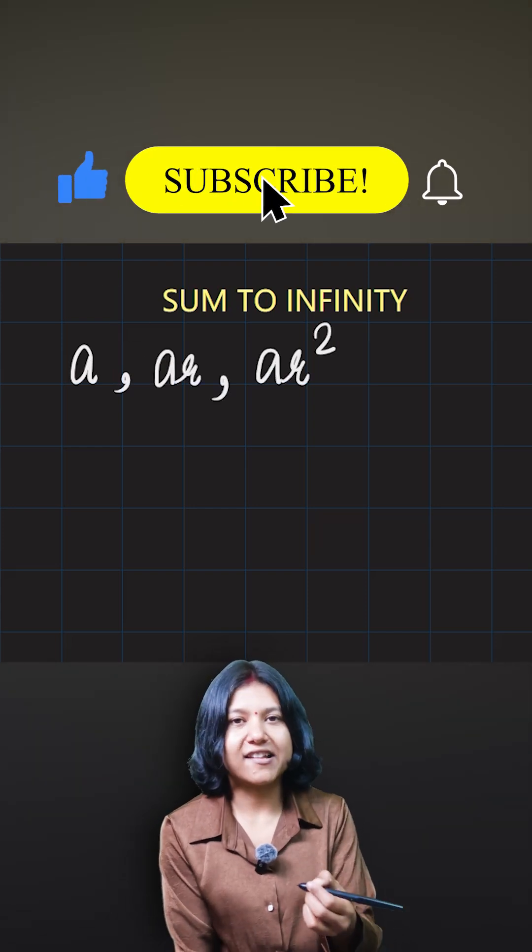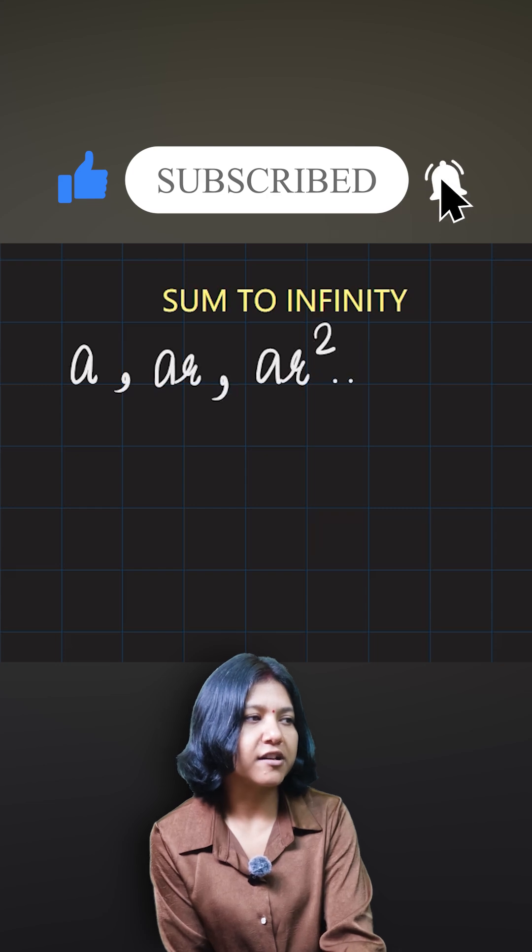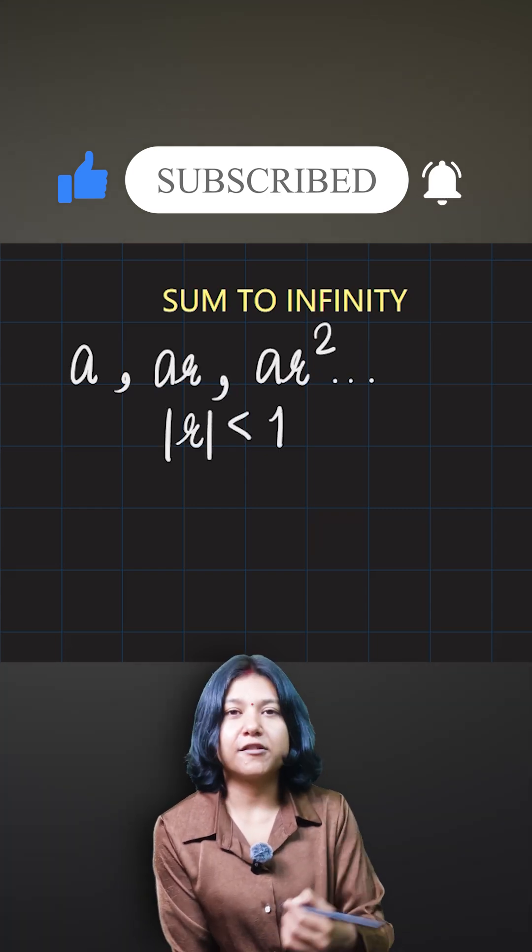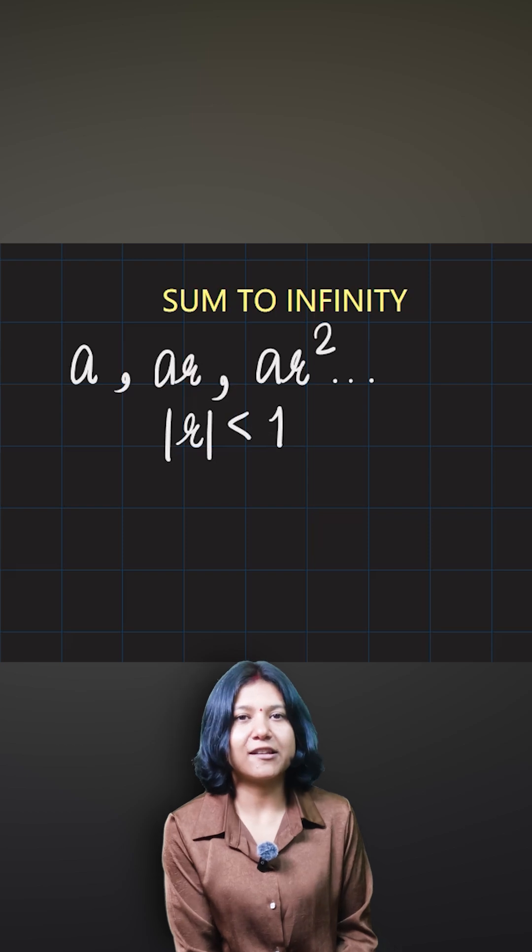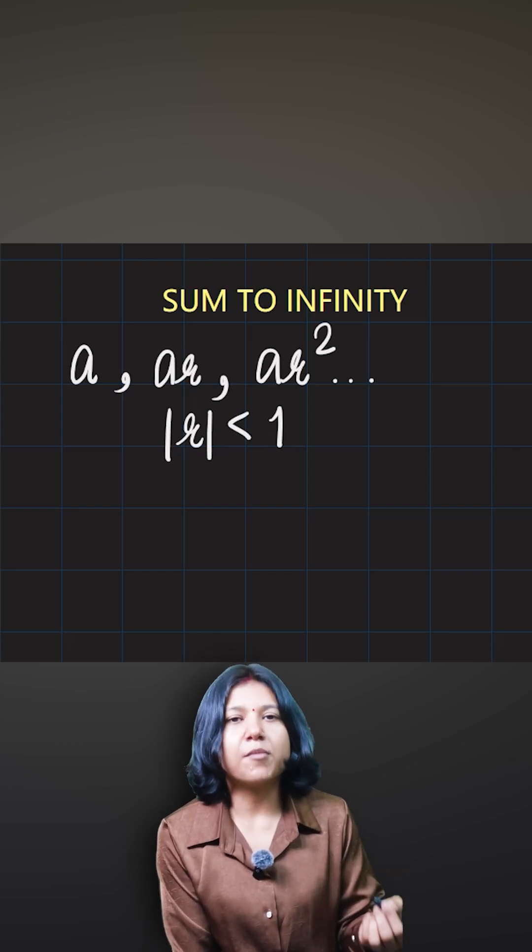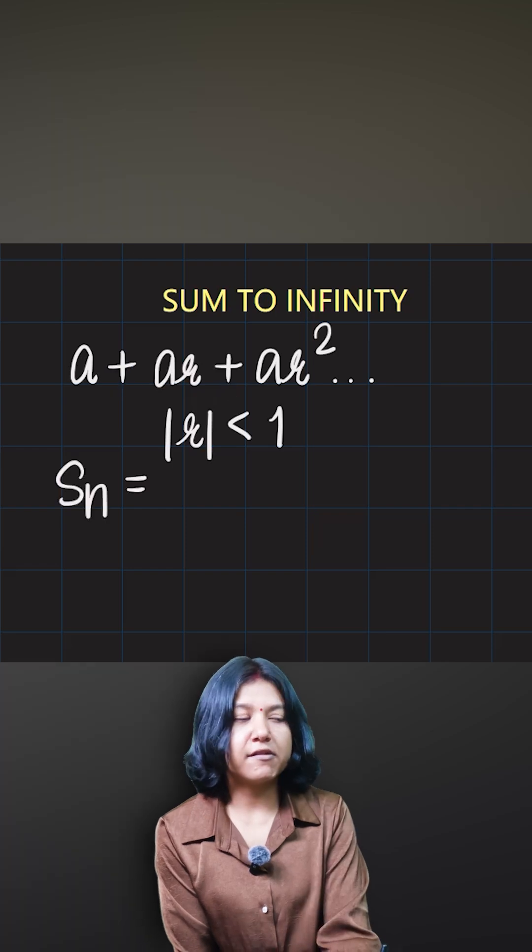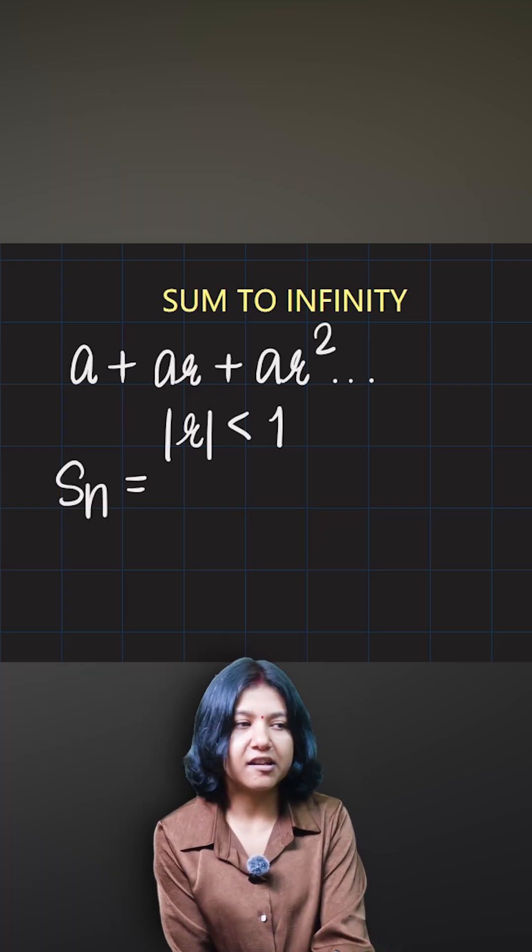I am multiplying by a value less than one. This value of r here is less than one. Understand one thing: if you have the ratio, the multiplier, less than one, then every time the terms will decrease. It will continue to decrease its value.